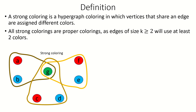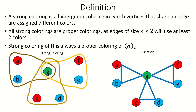Another useful fact about strong colorings is that a strong coloring of the hypergraph will always be a proper graph coloring of the two-section of that hypergraph, and vice versa.